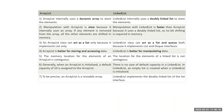ArrayList internally uses a dynamic array to store elements, while LinkedList uses a doubly linked list. Manipulation with ArrayList is slow because it internally uses an array — if any element is removed, all other elements are shifted in memory. For example, if you have 10 elements (index 0 to 9) and you remove the third index value, the fourth shifts to three, fifth to four, and so on up to nine shifting to eight.